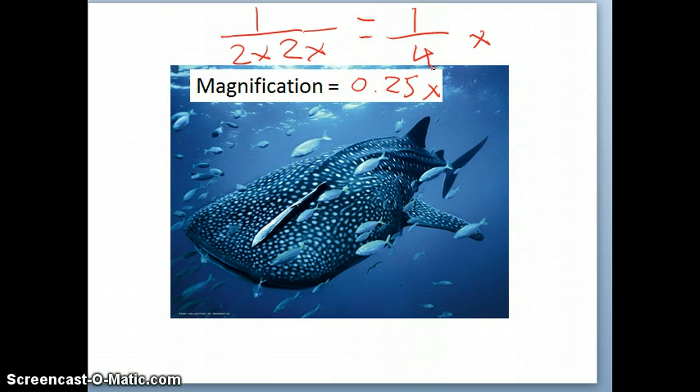So that's what it means. Whenever you're making the picture smaller, you're going to have a decimal. Whenever you're making the picture bigger, you're going to have like a larger number.